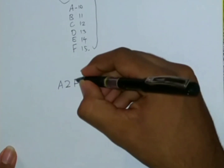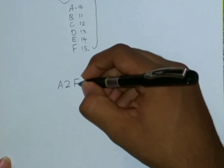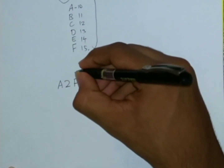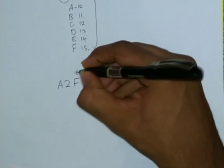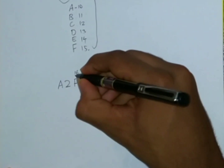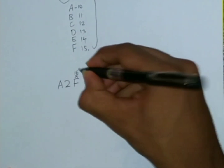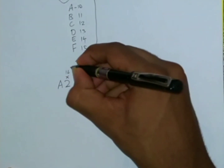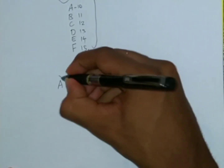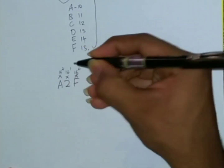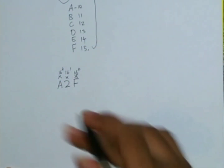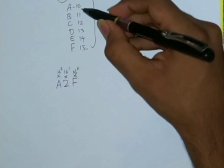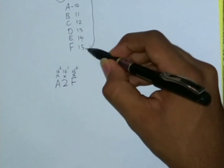You're gonna have to multiply the digits into the powers of 16. So this F is multiplied by 16 to the power 0, which is 1, and then this is 16 to the power 1, and this is 16 to the power 2. So as you can see, A is 10 and F is 15.